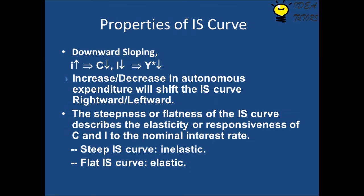Let's look at some properties of the IS curve. First, it is downward sloping: as interest increases, investment decreases, and thus output decreases. An increase or decrease in autonomous expenditure will shift the IS curve rightward or leftward accordingly. The steepness or flatness of the IS curve describes the elasticity or responsiveness of consumption (C) and investment (I) to the nominal interest rate — a steep IS curve indicates inelastic, and a flat IS curve indicates elastic.